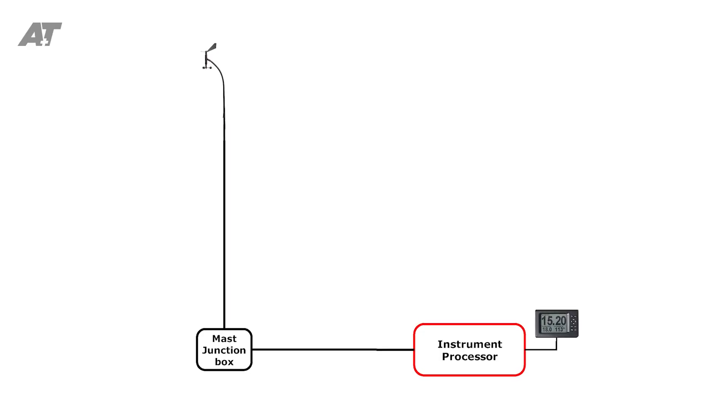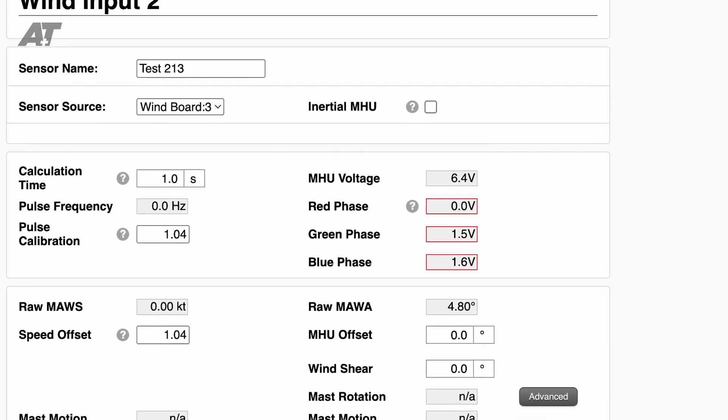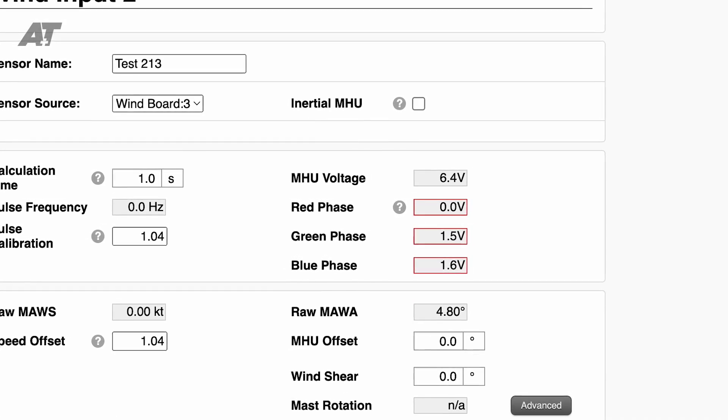If all of these are working and no data is shown on the processor, then the processor is faulty. If an A&T instrument processor is used, then these diagnostics are all provided on the web server.